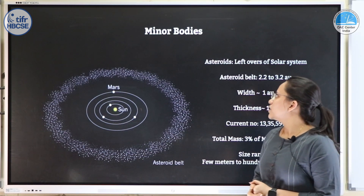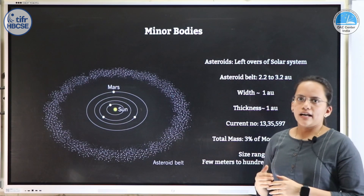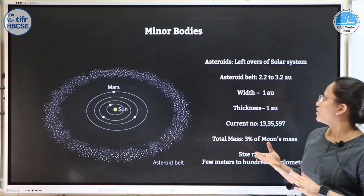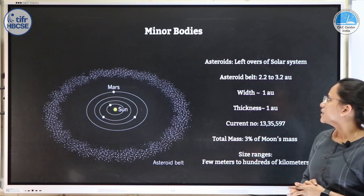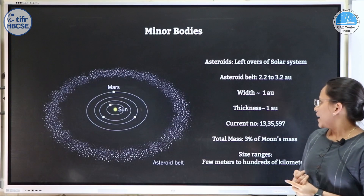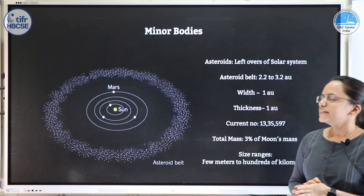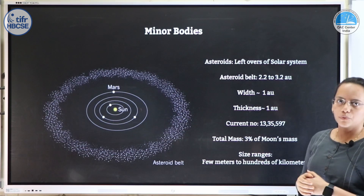Now we come to the minor bodies. Between the orbits of Mars and Jupiter there is a belt of leftovers from the solar system called asteroids. This asteroid belt is between 2.2 to 3.2 astronomical units, with a width of about 1 AU and a thickness of about 1 AU. The total mass of all these asteroids is about 3% of the moon's mass.